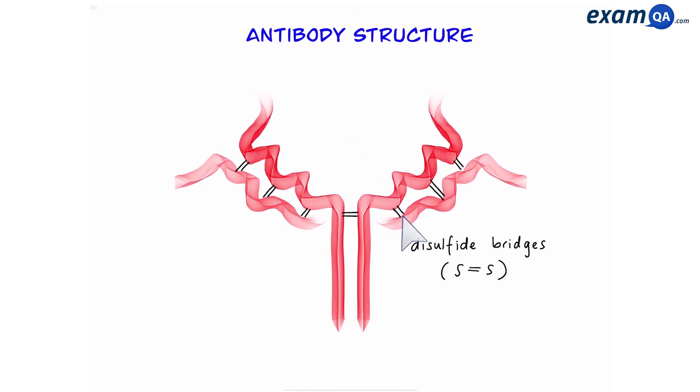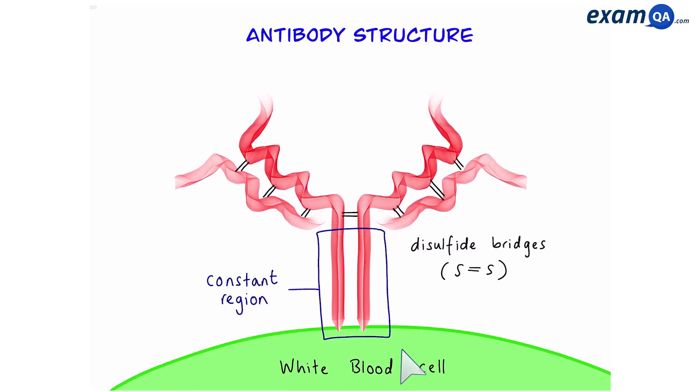The polypeptide chains are joined together by disulfide bridges. This area is known as the constant region. It's responsible for allowing the antibody to bind to white blood cells.